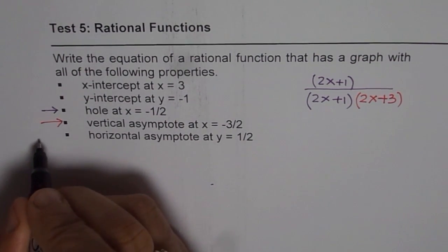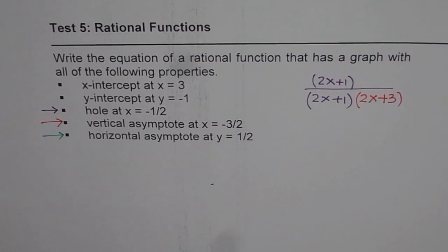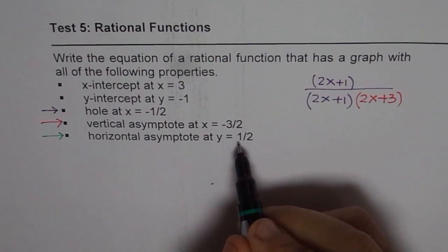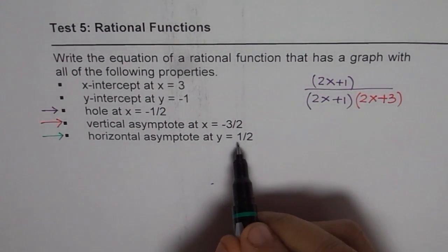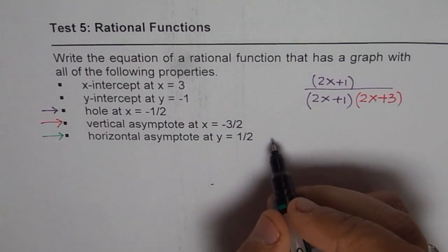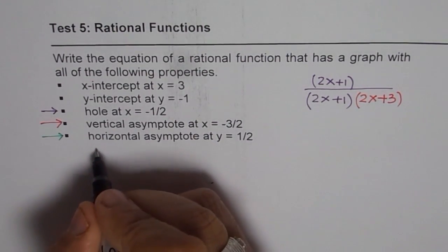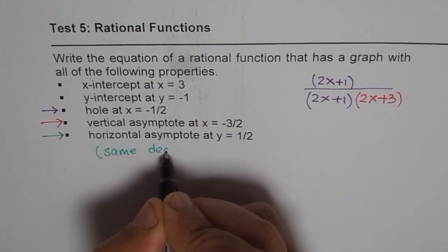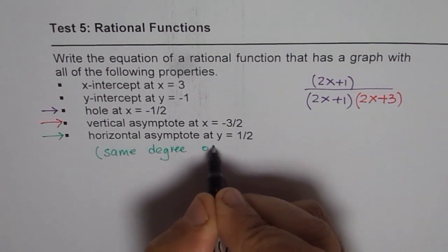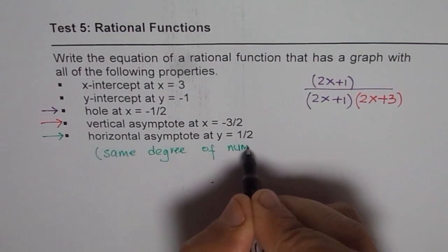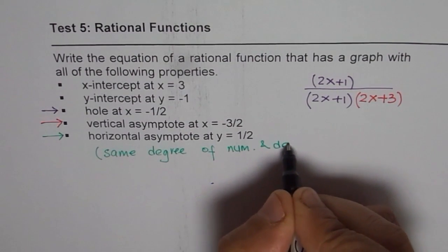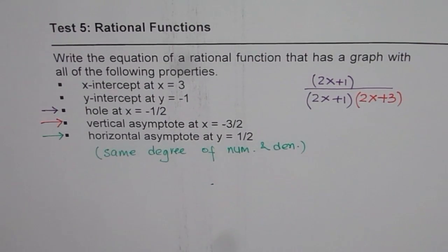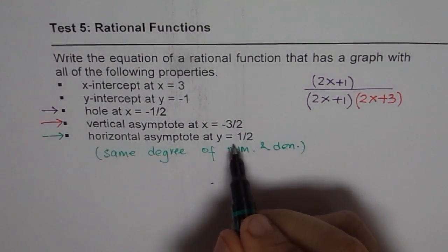Now, let's look into the horizontal asymptote at Y equals to half. Now, Y equals to half horizontal asymptote means that we have same degree in numerator and denominators. That means same degree of numerator and denominator. That is what it means when I say horizontal asymptote at Y equals to half.